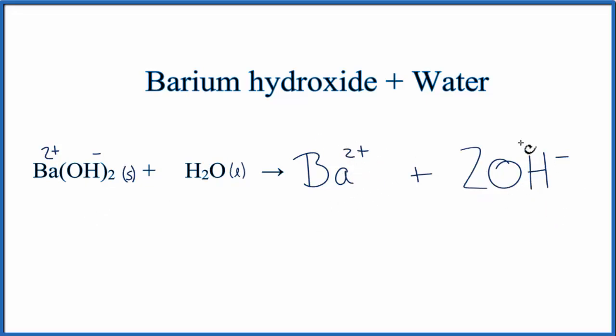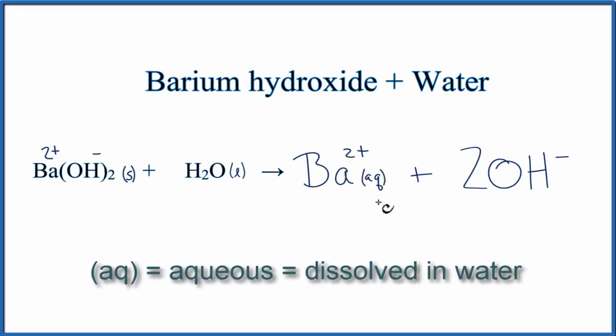Because this barium and hydroxide, these ions are dissolved in water, we can write Aq after them, and that means aqueous, or dissolved in water. So we'll do that for both of these, and that shows that they're dissolved in water.